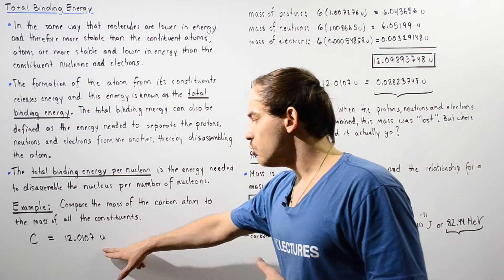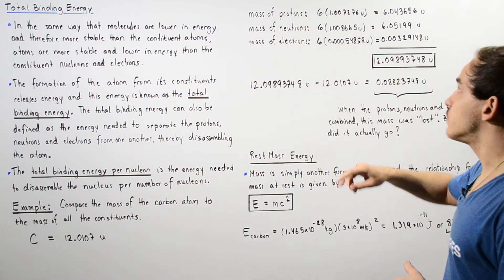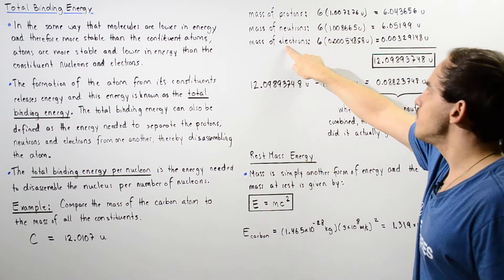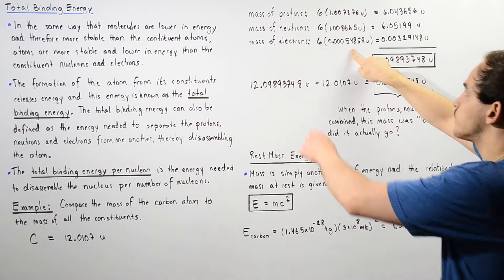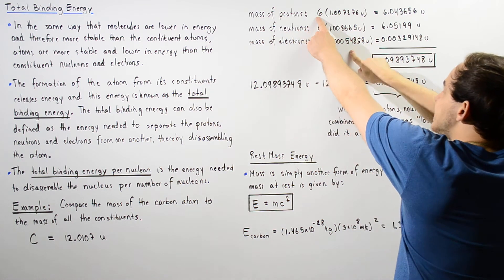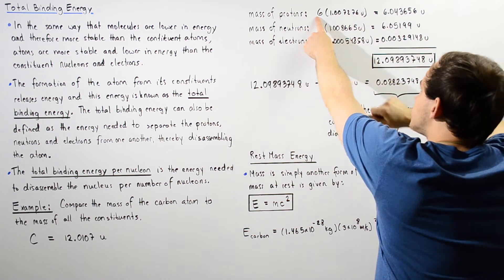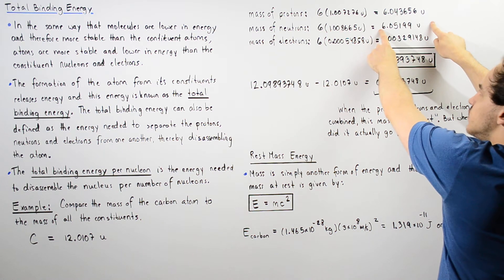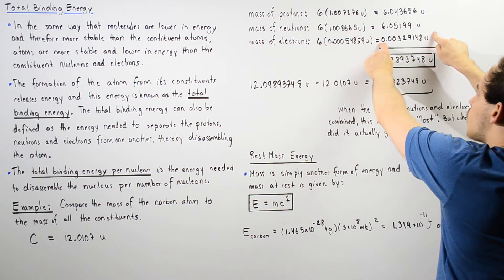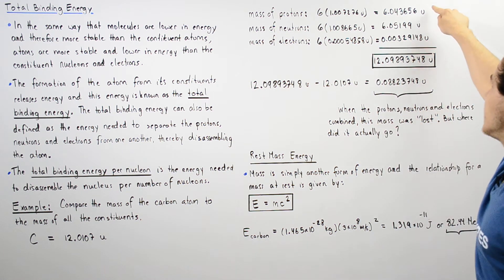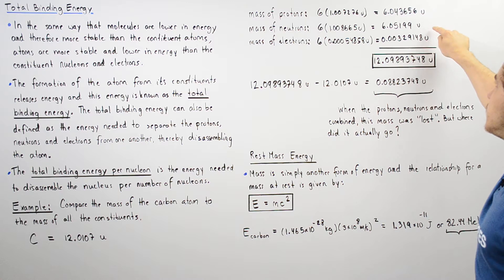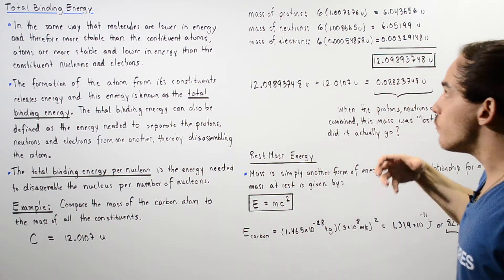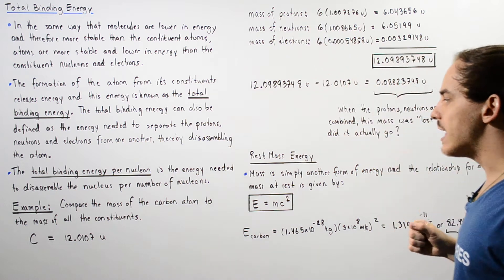The mass in unified atomic mass units of a proton is given, the mass of a neutron is given, and the mass of an electron is given. Six multiplied by each respective mass gives us the total mass of our protons, the total mass of the neutrons, and the total mass of our electrons. If we sum up these quantities, this will give the total mass of all these constituent elements.